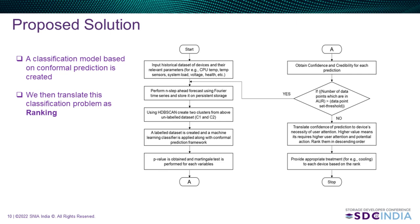Coming to the actual proposed solution, what we've tried doing is having a classification model based on conformal prediction, and then translate this classification problem into a ranking. As we saw in the initial slides, we started looking at important data points in terms of CPU temperatures, temperatures for different sensors, system load, voltages, health-related metrics, and even some error conditions. We transform this data into N-step ahead using a time series approach, then use HDB scan to create two distinct clusters C1 and C2, and put it as a binary classifier problem with conformal prediction to get confidence and credibility scores.